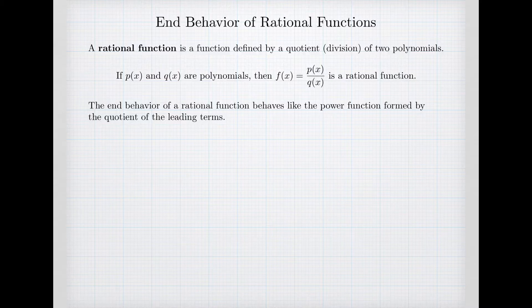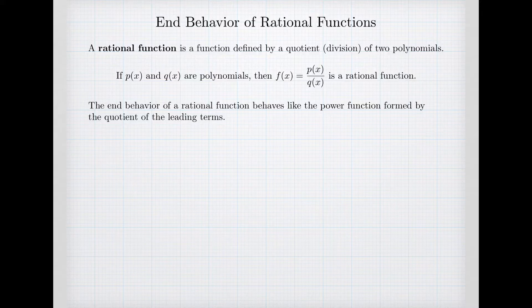The summary of what we're learning is that the end behavior of a rational function will behave like the power function formed by the quotient of the leading terms. What that means is we look at the leading term — the highest power of the numerator p of x — and the highest power of the denominator q of x. We create the ratio of those and simplify. That'll be a power function, and the end behavior will behave like that.